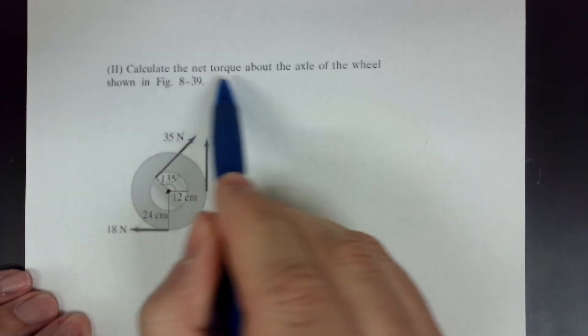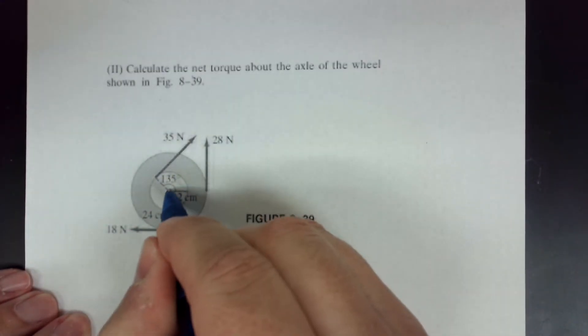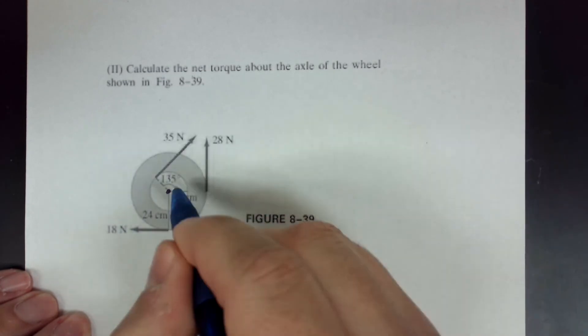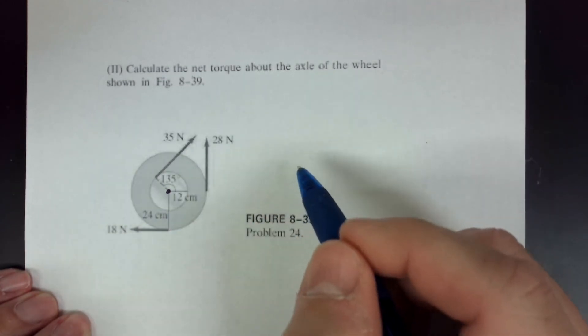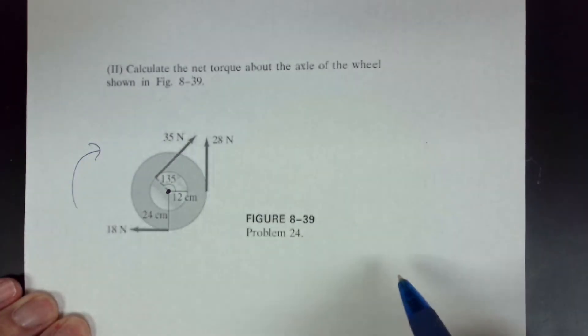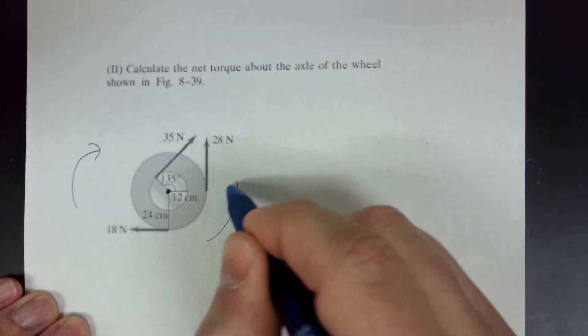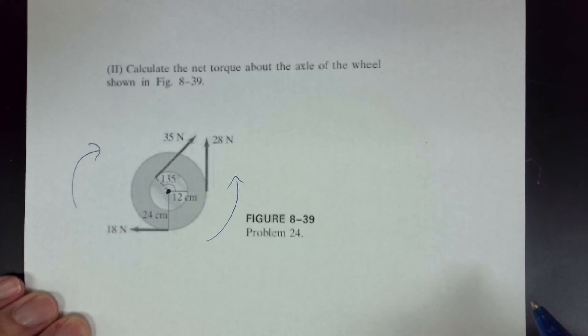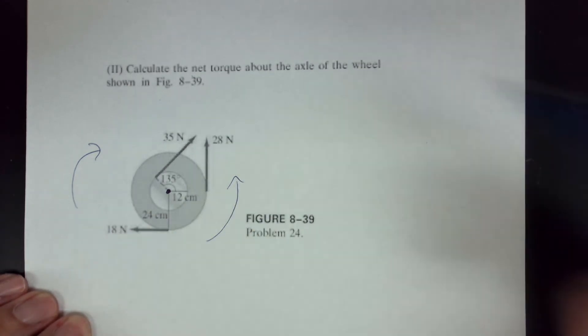Last problem. We're going to calculate the net torque about the axle of the wheel. So the axle of the wheel is right there. To get the net torque, I really just have to look at how much torque I have going that way and compare it to how much torque I have going that way, and then find the difference between the two. That'll tell me the net. Because if they were balanced, the net would be zero.